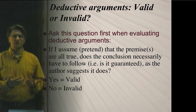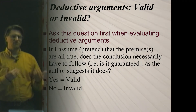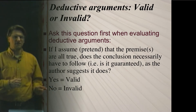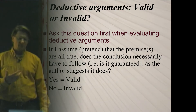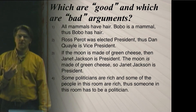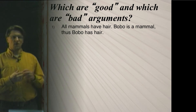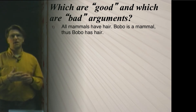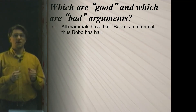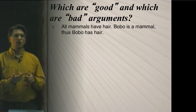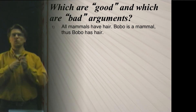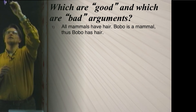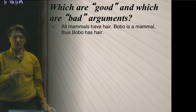Now let's apply this back to our previous arguments. The first one — all mammals have hair, Bobo is a mammal, thus Bobo has hair — we'll consider as a deductive argument. If we assume all mammals have hair and Bobo is a mammal, would it be guaranteed that Bobo has hair? Yes. So that is a valid argument. For the second one, if we assume Ross Perot was elected president, would that guarantee Dan Quayle is vice president? No — even if they ran on the same ticket, Dan Quayle might not still be alive at that moment. Since the conclusion is not 100% guaranteed by the premise, we call it invalid.